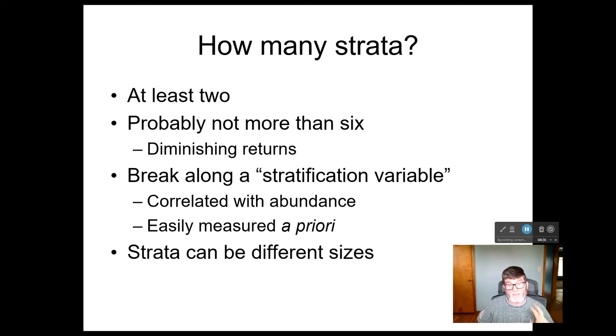So first off, how many strata? We're going to want at least two, because if we don't break it into at least two pieces, then we've got to go back to a simple random sample. And you probably don't want more than six. There's diminishing returns for stratifying into finer and finer levels. And there are more complex sampling schemes that can use a continuous variable in order to draw your sample. And we're going to choose a stratification variable, and we're going to assume it's correlated with the thing we want to estimate. And ideally, we have to be able to measure it without going out and doing our sample. So it might be a habitat type that we can get off of a GIS layer, or something along those lines. The strata can also be different sizes. Each stratum does not have to have the same number of sample units in it as the other stratum.